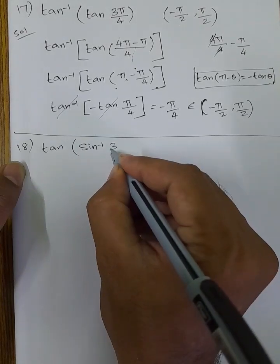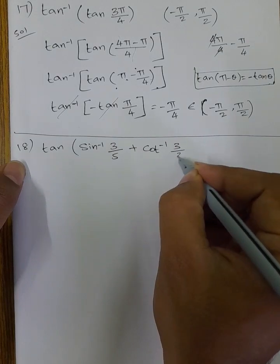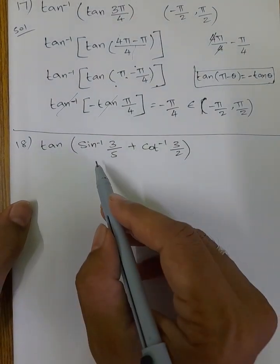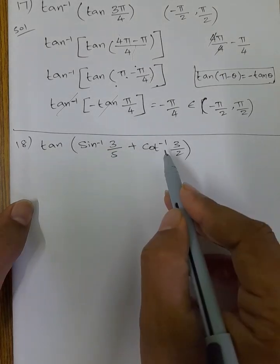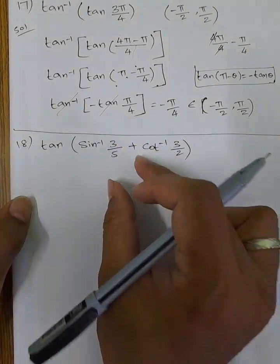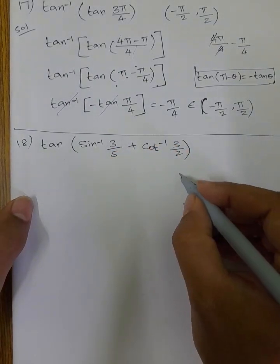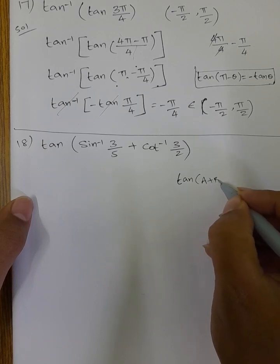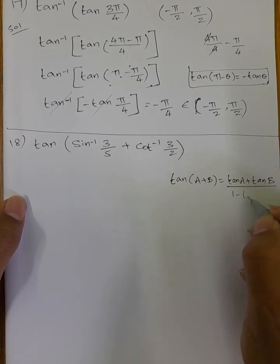Next question: find the value of tan of [sin inverse of (3/5) plus cot inverse of (3/2)]. We will use the formula tan(A+B) = (tan A + tan B) / (1 minus tan A into tan B).